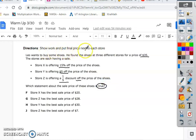I said here to show your work and put the final price next to each store. Not the off, but the final price. So, one thing we know is our TWO, Total Whole Original, that's right there. That's the regular price for the store.